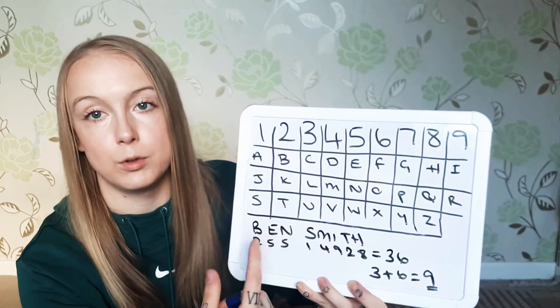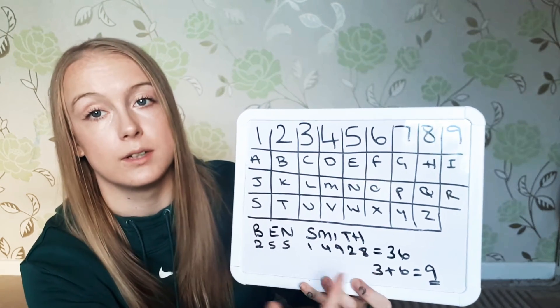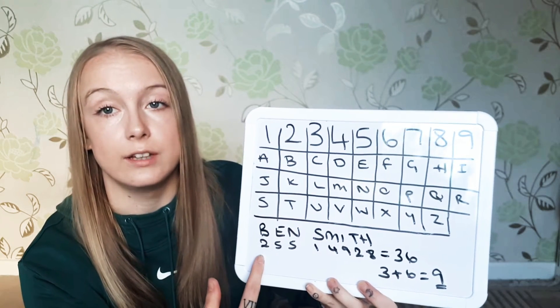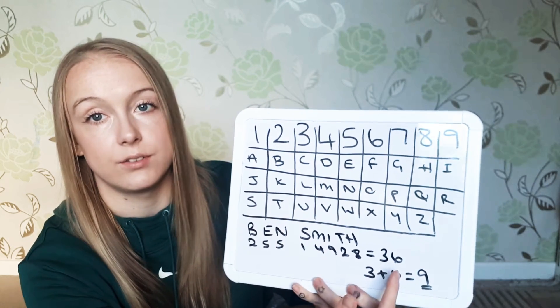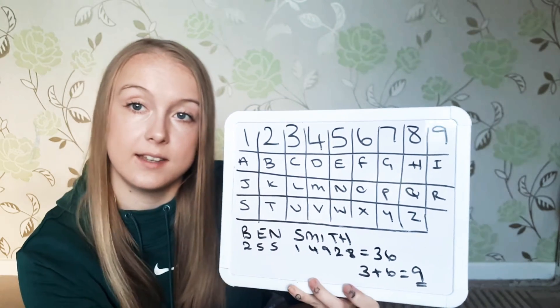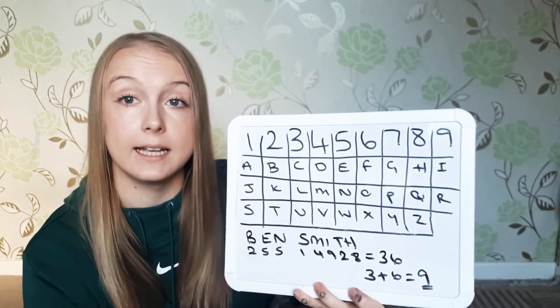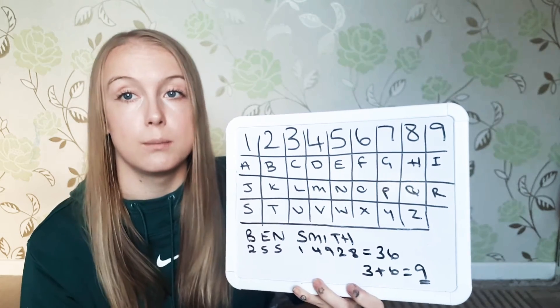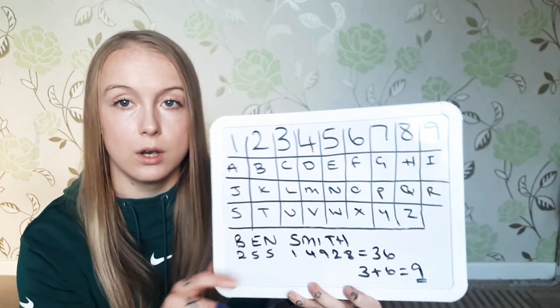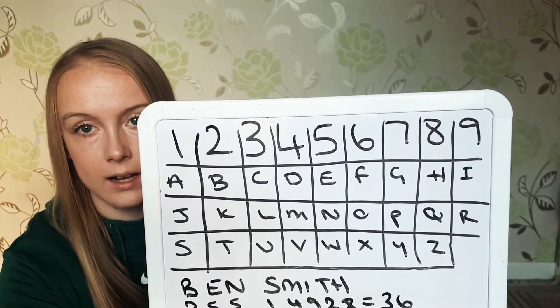You're going to spell out your name and put all the correlating numbers underneath, then add all of those numbers together. I've done an example: if your name is Ben Smith — remember you want to use the full name, all your middle names — you put two for the B, five for the E, five for the N, and so forth. In this example it makes 36, and then you add the three and six together to reduce down to make the number nine. You either want to get a number between one and nine, or 11, 22, or 33 — because those are what's known as master numbers. Go ahead and pause the video and work out your destiny number. I'll leave timestamps in the description below for you to skip forward to your destiny number.